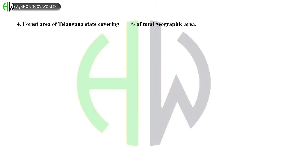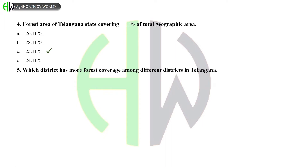Forest area of Telangana state covering is how much percent of total geographic area? Options: 26.11%, 28.11%, 25.11%, or 24.11%. And the correct answer is 25.11%.